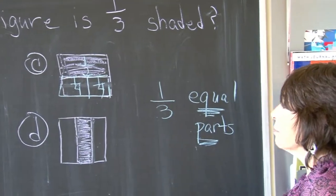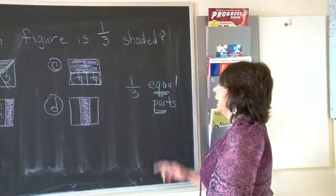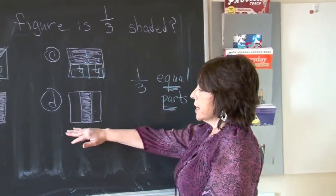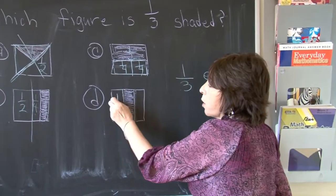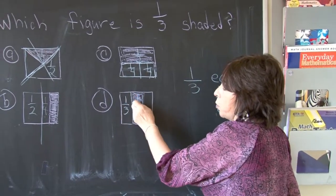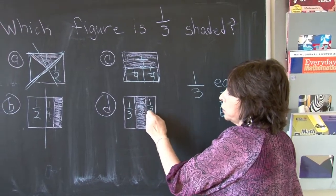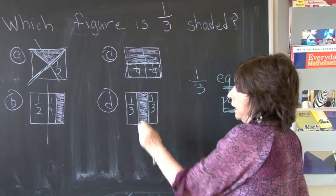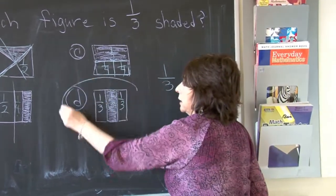So remember, when we do fractions, it's equal parts. This is equal parts, each part being one-third. And only one of the three is shaded. So the correct answer is D.